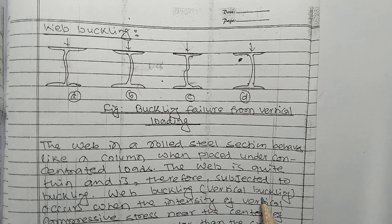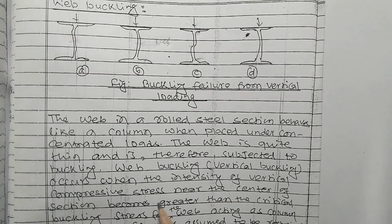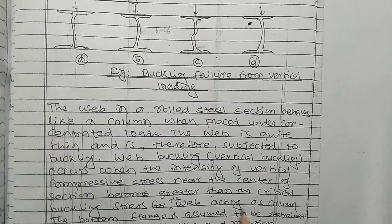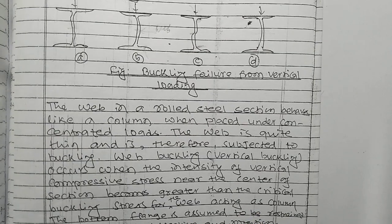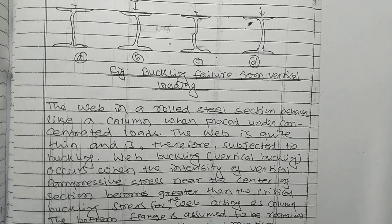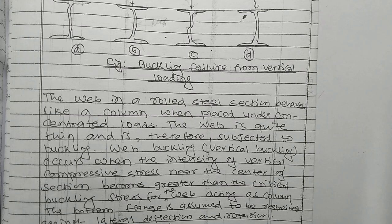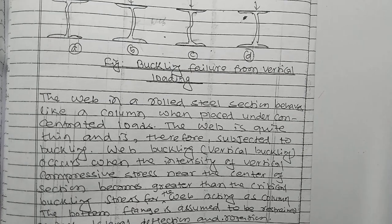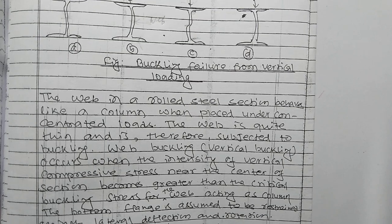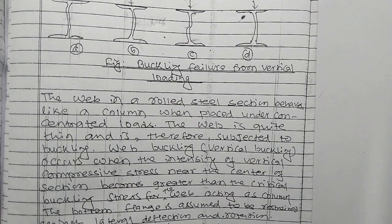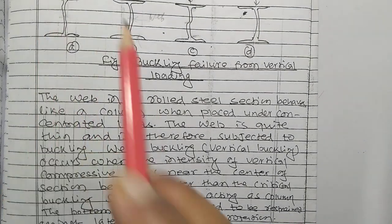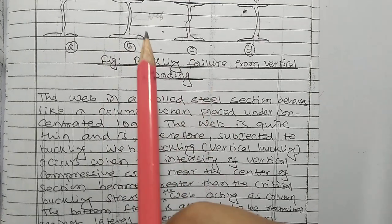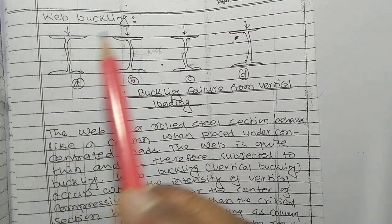Web buckling occurs when the intensity of vertical compressive stress near the center of the section becomes greater than the critical buckling stress for the web acting as an edge column. The bottom flange is assumed to be fixed against lateral deflection and rotation. Web buckling is checked using the condition d/tw < 67ε, where ε equals 1, so d/tw should be less than 67.